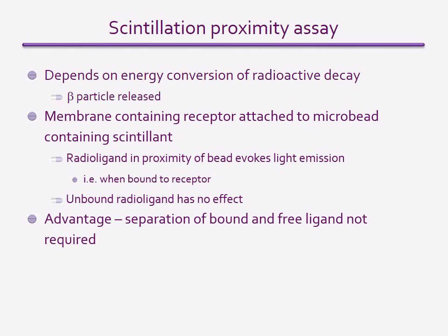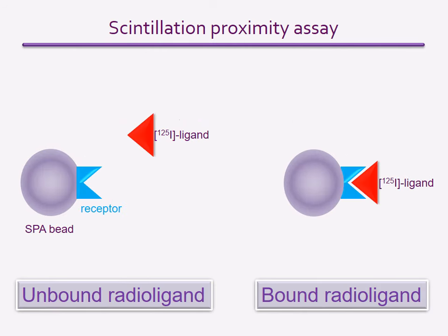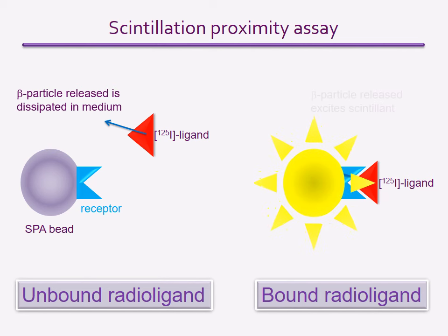The ability to measure binding without the need to separate out the bound and free ligand by filtering is a distinct advantage of this method, but non-specific binding still has to be taken into account. On the left hand side, the scintillation proximity assay bead is shown with its attached receptor; the radio ligand is not bound to the receptor, so although it emits beta radiation, it is too far away from the scintillant to be detected. On the right hand side, the radio ligand is bound to the receptor, so beta radiation is released sufficiently close to the scintillant to excite it to release a burst of light, which is recorded by the detector.